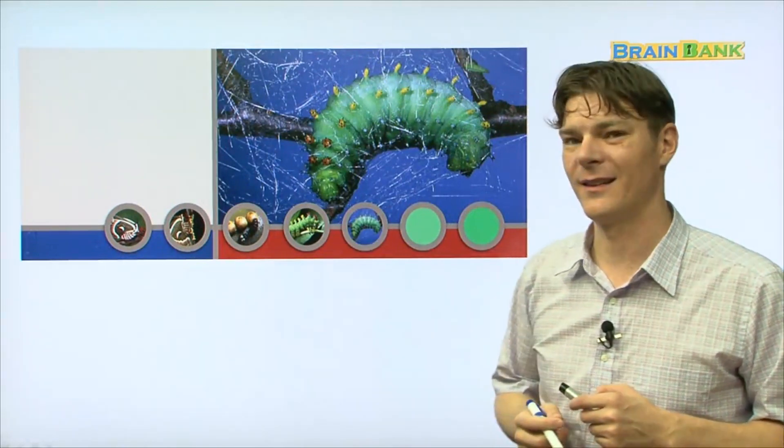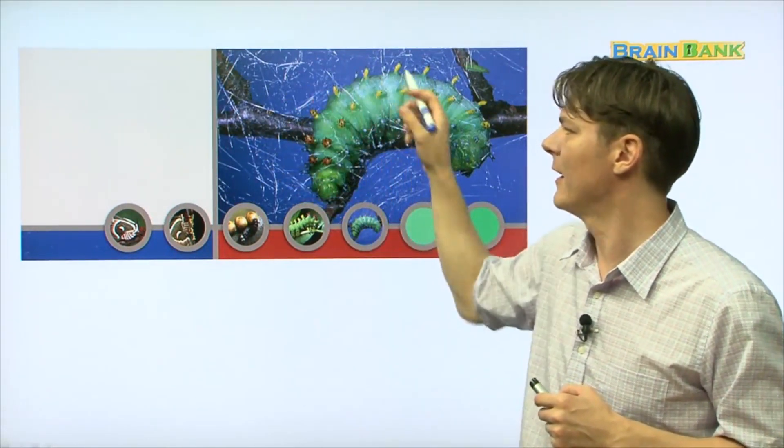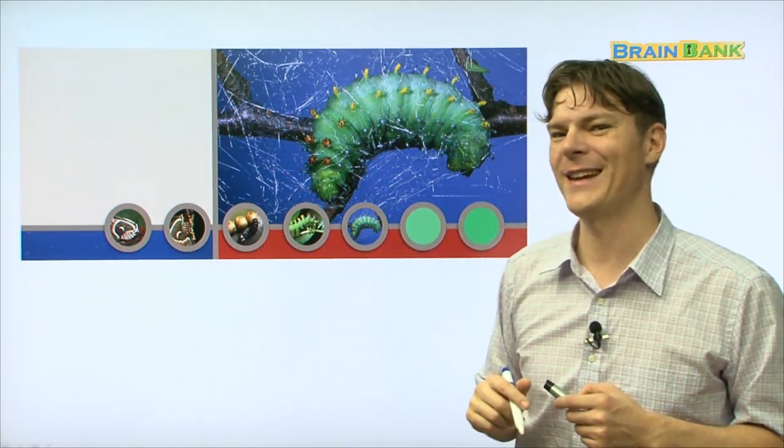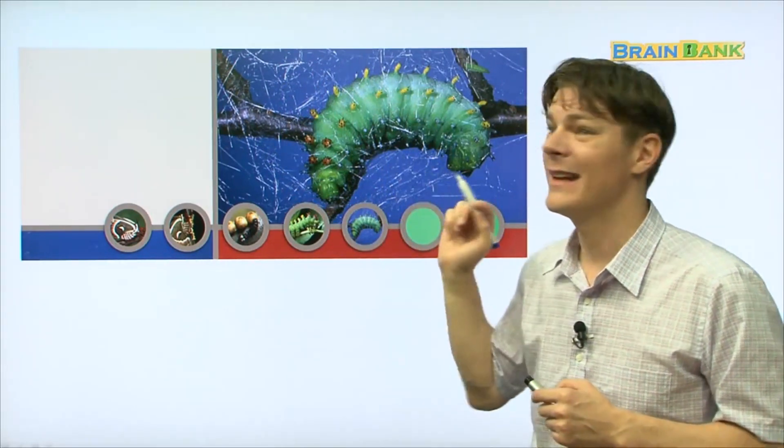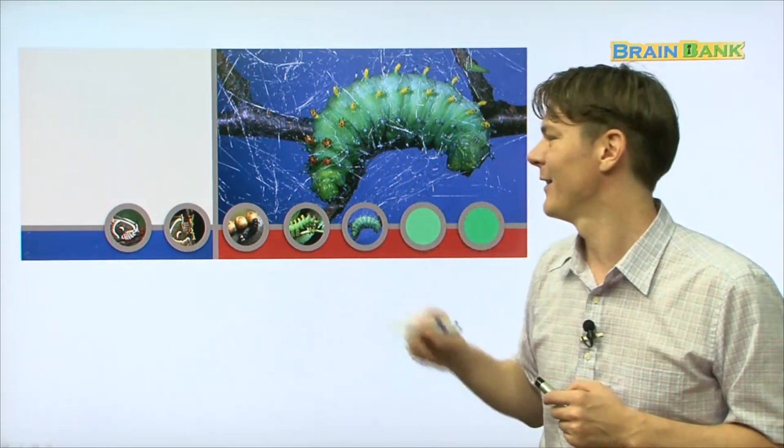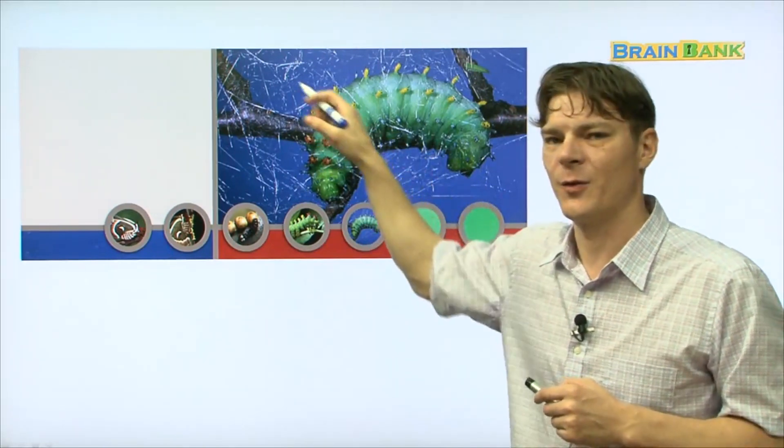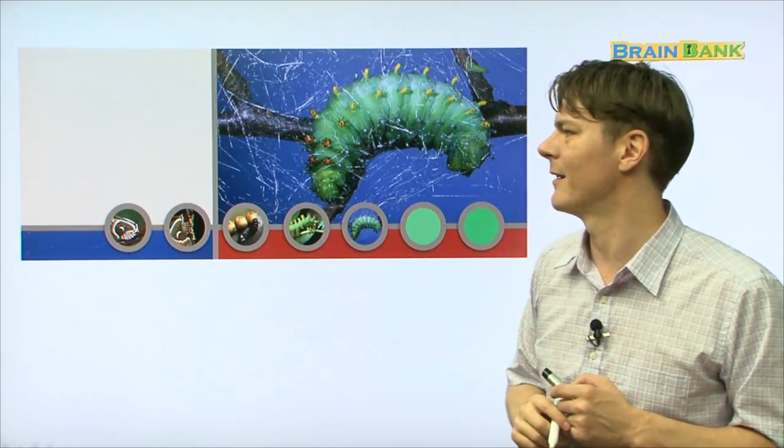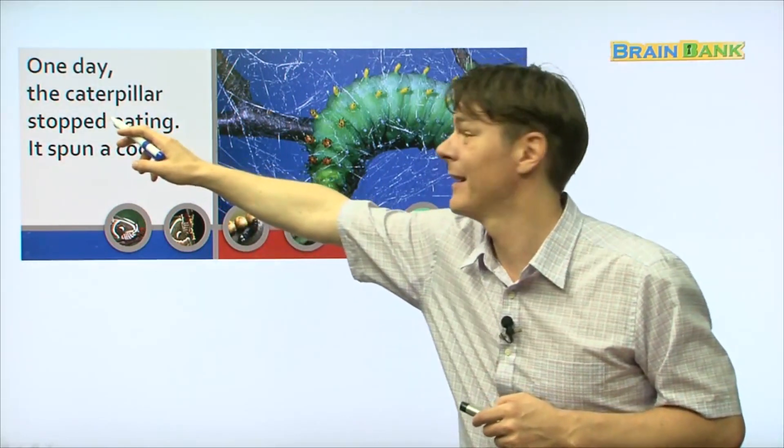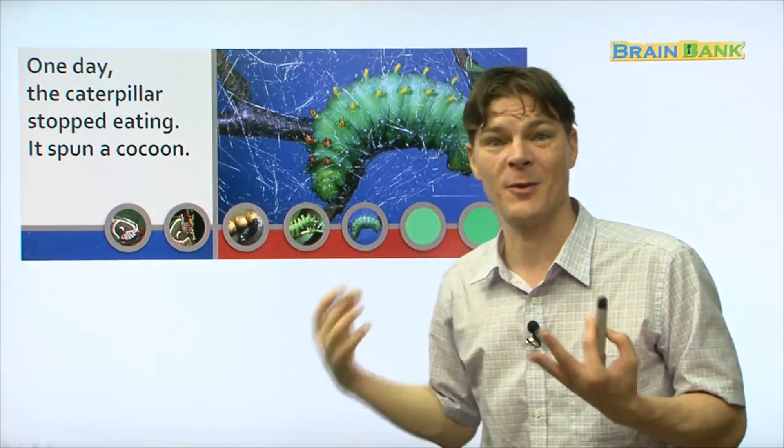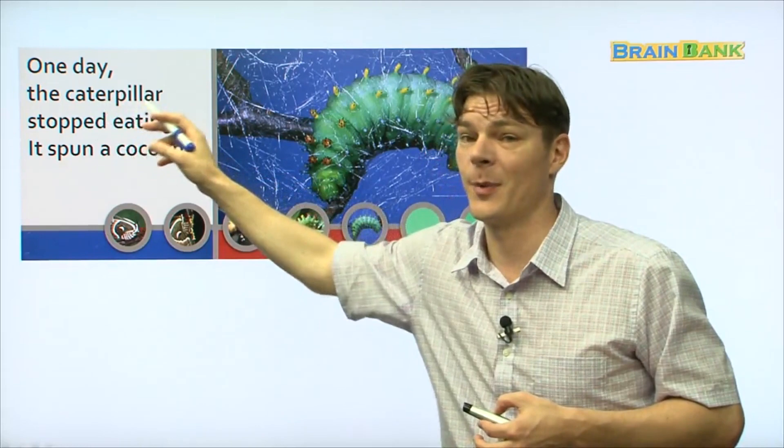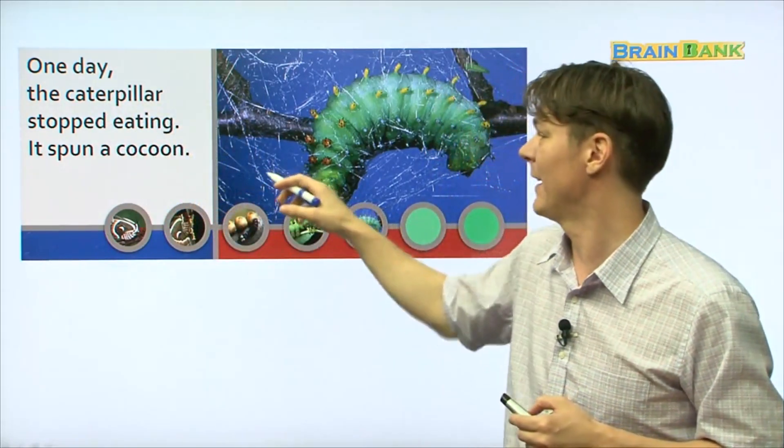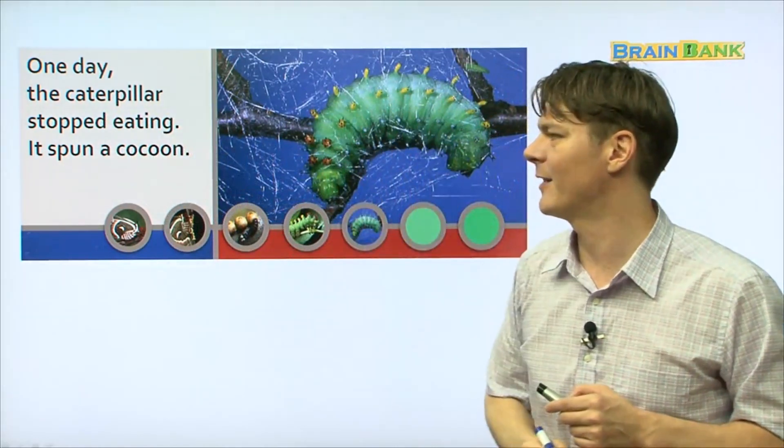Now, look at this. What is all of this stuff around here? Is the caterpillar trapped in a spider web? No, I don't think so. I think this came from the caterpillar. So, it's starting to spin this really stringy stuff and it kind of looks like a web. I wonder what it is. One day, the caterpillar stopped eating. Everyone repeat with me. One day, the caterpillar stopped eating. It spun a cocoon. It spun a cocoon. Wow. Look at that. It's spinning a cocoon.